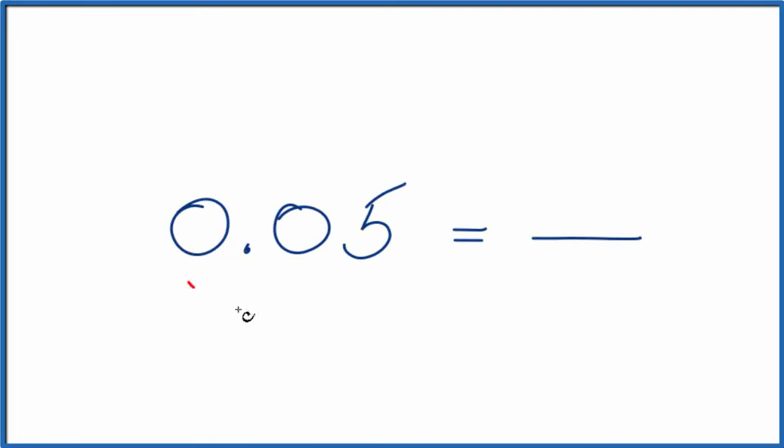Let's convert 0.05 from decimal form to fraction form, where we have a whole number numerator over a whole number denominator.